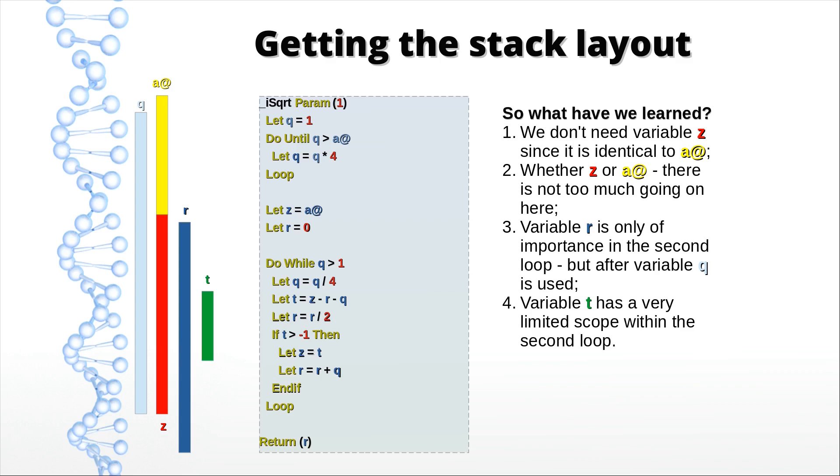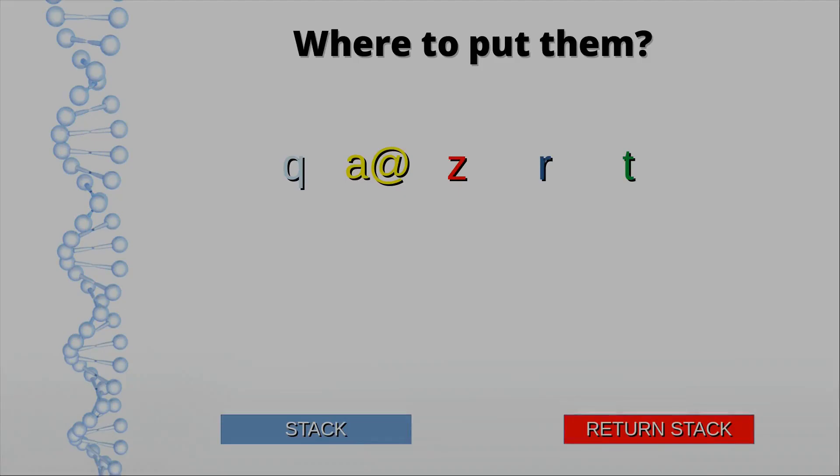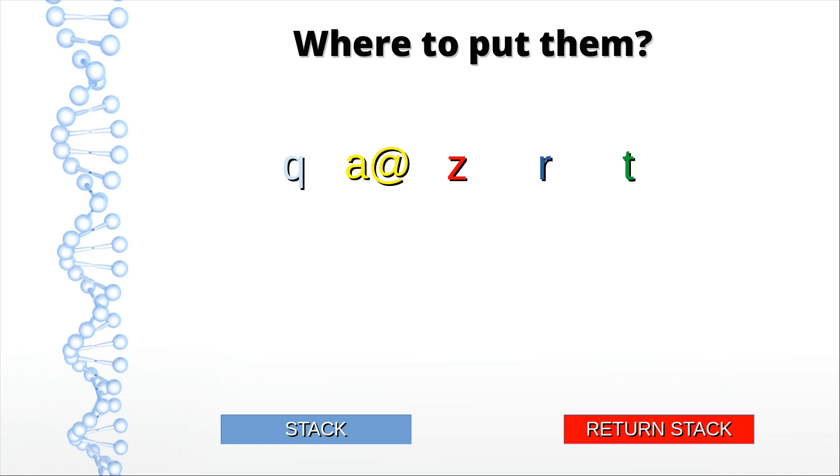Now we have to decide where we place them. We don't need variable z, so let's drop this one. But r is quite an active one, so let's place that one on the data stack. The same thing goes for q. On the data stack you go. The parameter seems far better suited for the return stack since it rarely changes. And let's forget about t for the moment. We'll deal with that one when it comes up.